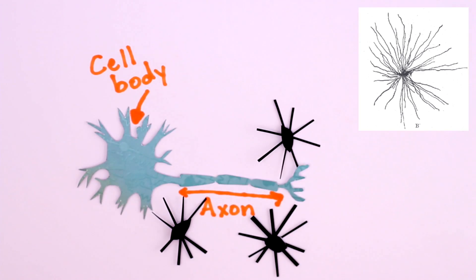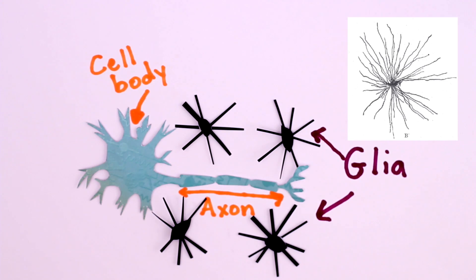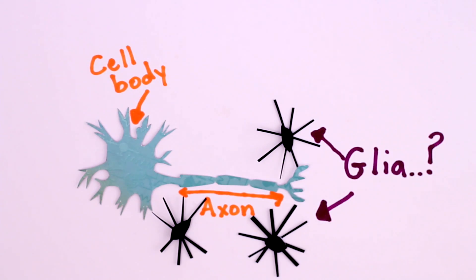They surrounded the larger cell bodies and axons of neurons. The cells were called glia, but what they did was a mystery.